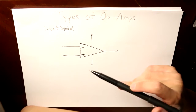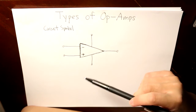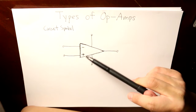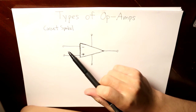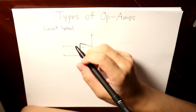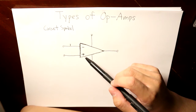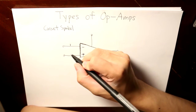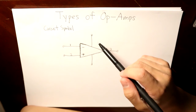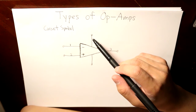There are five pins that you should be aware of when dealing with op amps. The first pin is the negative input terminal — we'll label that as one — and then the positive input terminal, which is two, and then we have the output terminal right here, which is three.